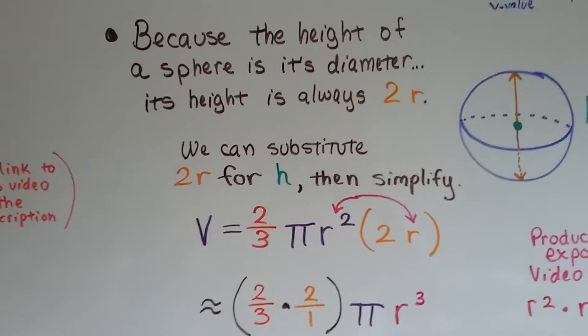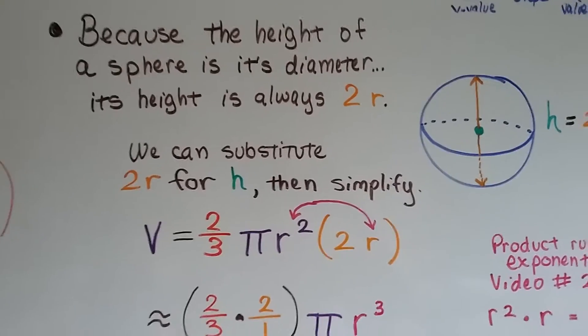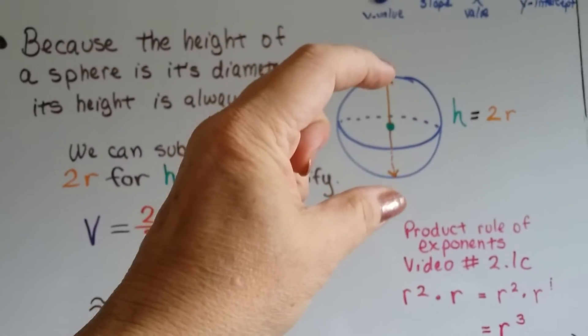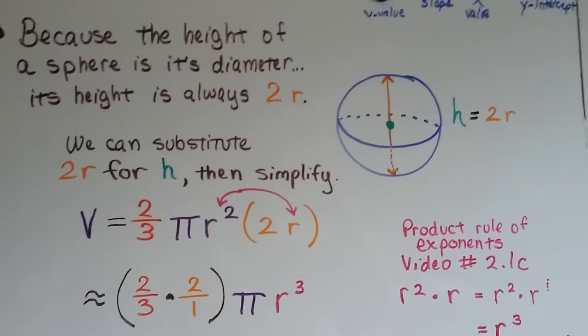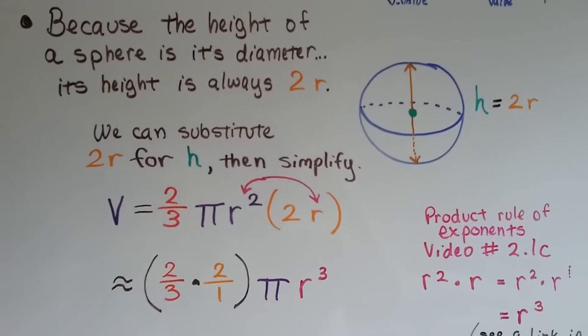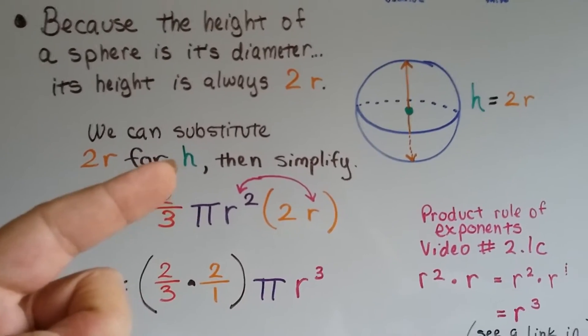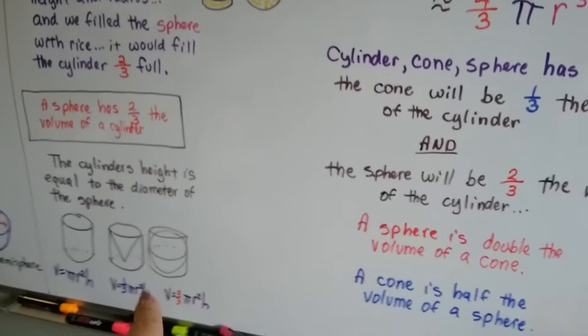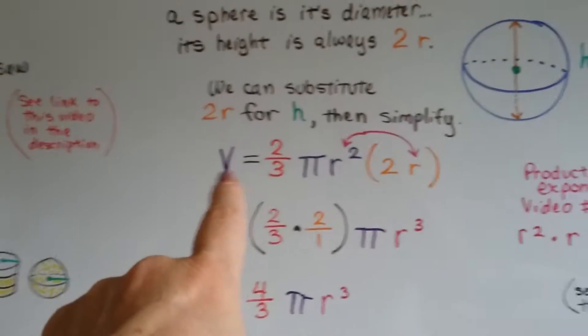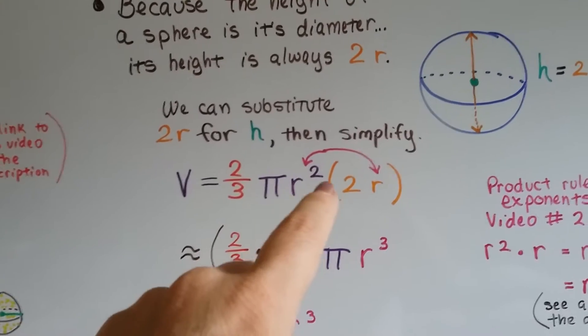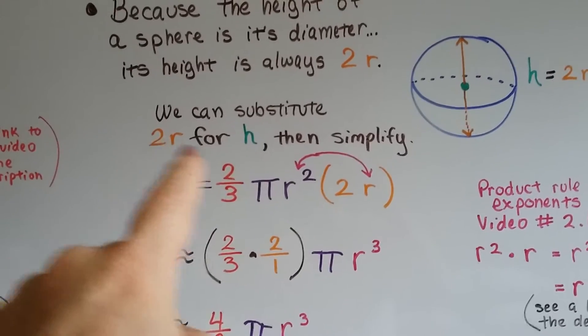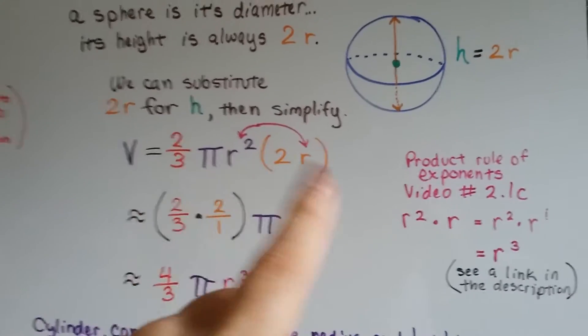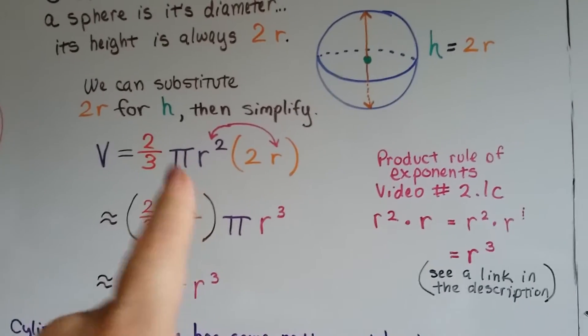Because the height of a sphere is its diameter, its height is always 2r. If that's the radius, then two of them is its diameter. That's its height. The height is equal to 2r. And we can substitute that 2r for the h for height and then simplify it. So we had volume equals two-thirds pi r-squared h right here. And we're going to take out the h and we're going to put the 2r, the two radius, for h instead. And we're going to combine and simplify.